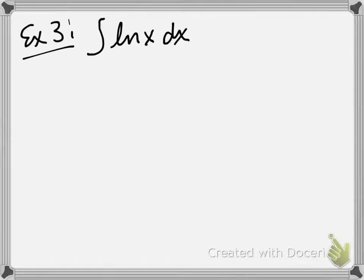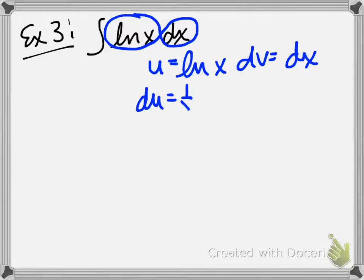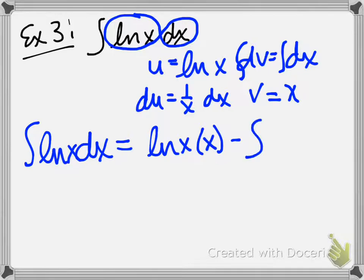We've talked about before that you cannot integrate ln directly. What we're going to do is take ln(x) and dx and make it look like a product. So u = ln(x) and dv = dx. If I take the derivative of ln(x), I get 1/x dx as du. If I integrate dv to get v, dx becomes x. Plugging this in: the integral of ln(x) dx equals u times v — which is ln(x) times x — minus the integral of v times du, which is x times (1/x) dx.